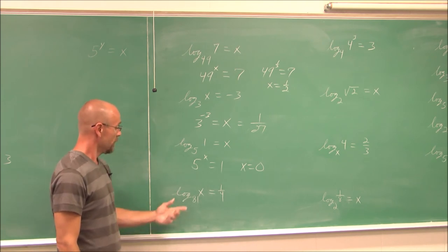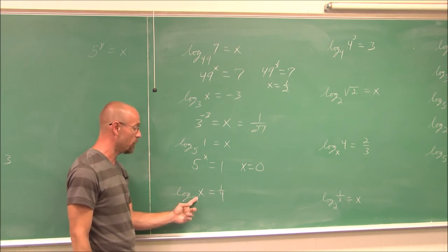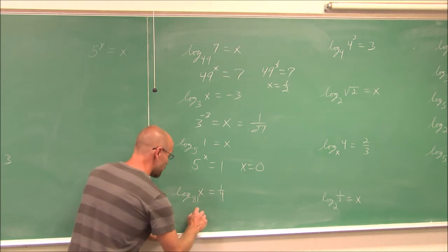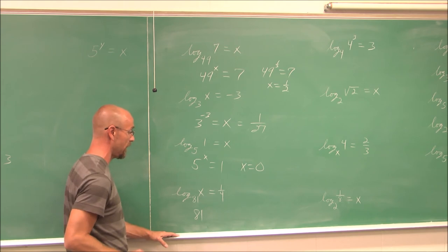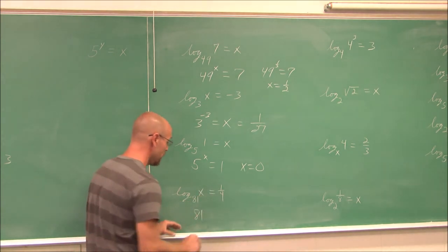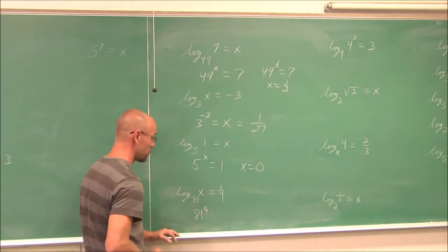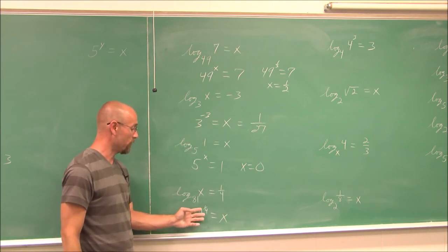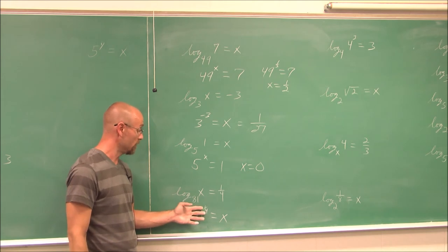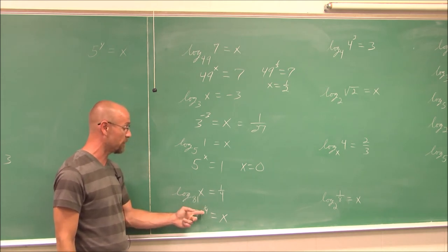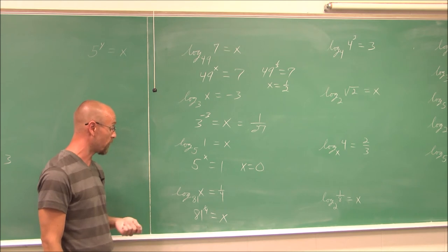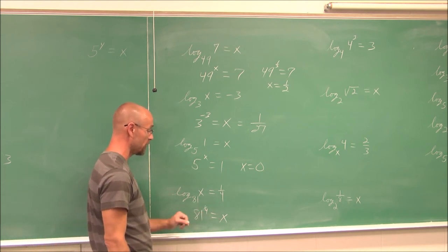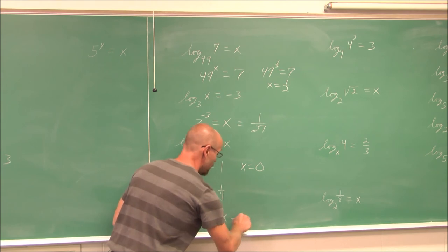Here we have log base 81 of x equals 1/4. Rewriting: 81 to the 1/4 equals x. A power of 1/4 means the fourth root. Since 81 is a perfect fourth power, the fourth root of 81 is 3. So x equals 3.